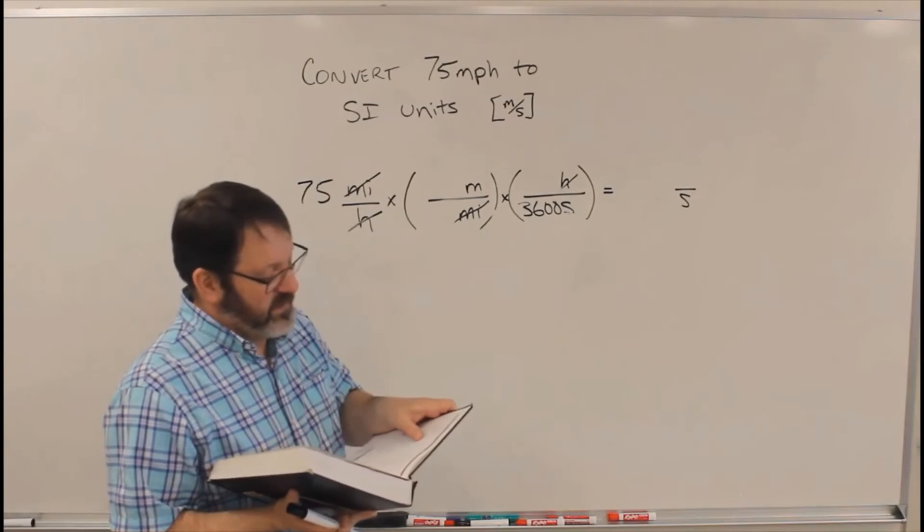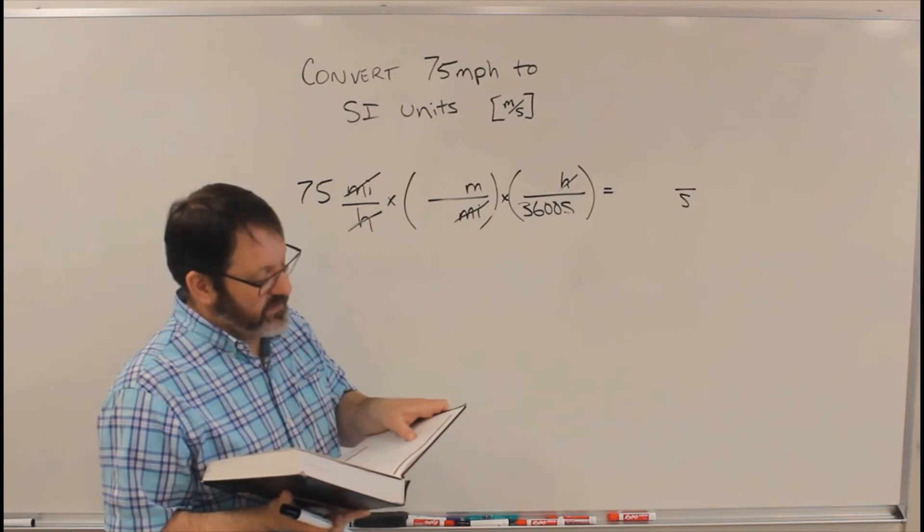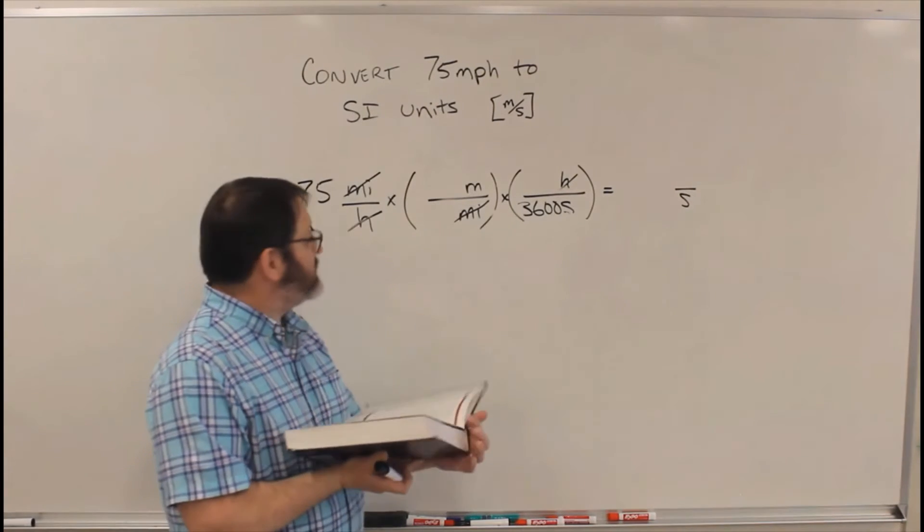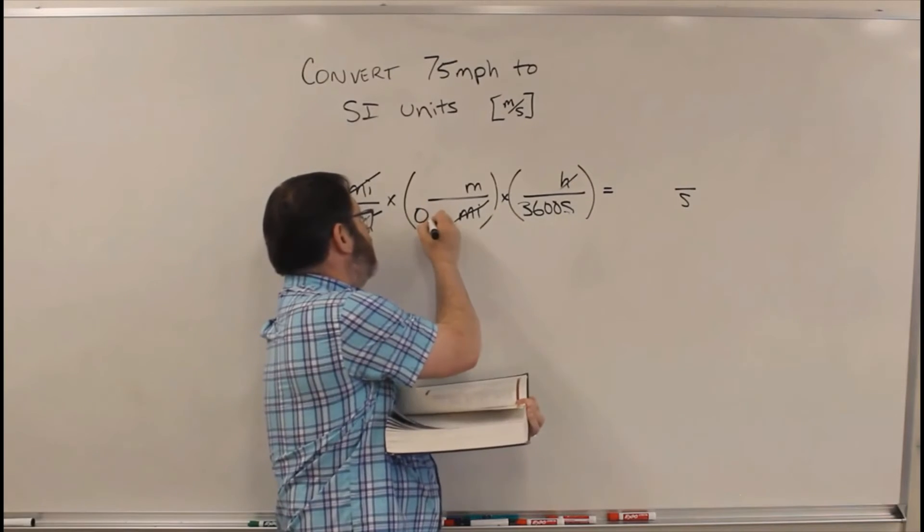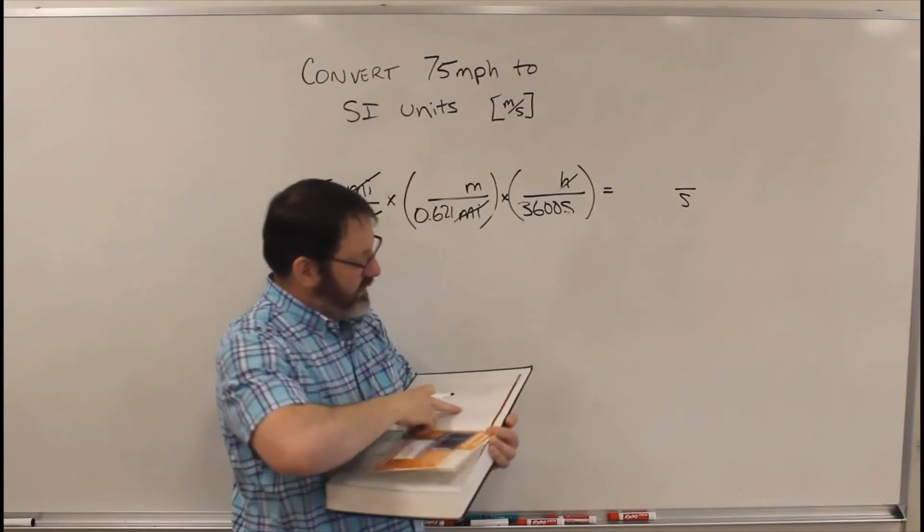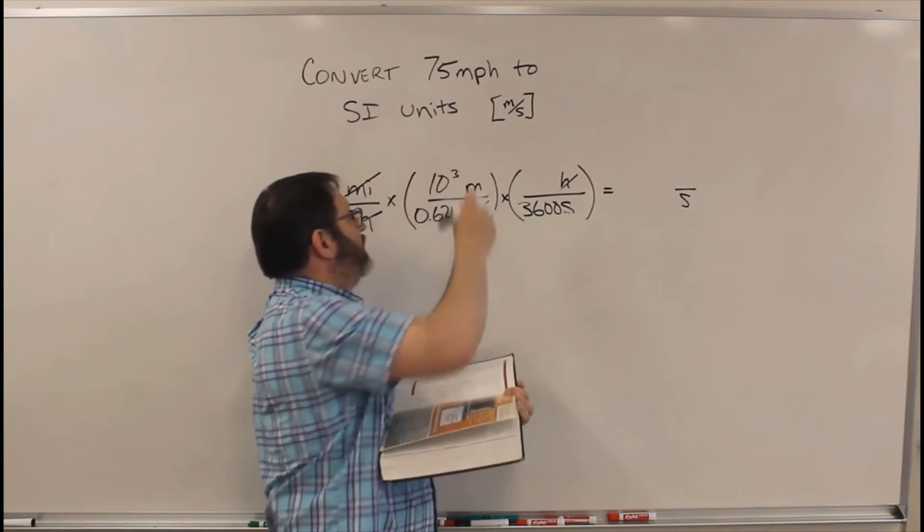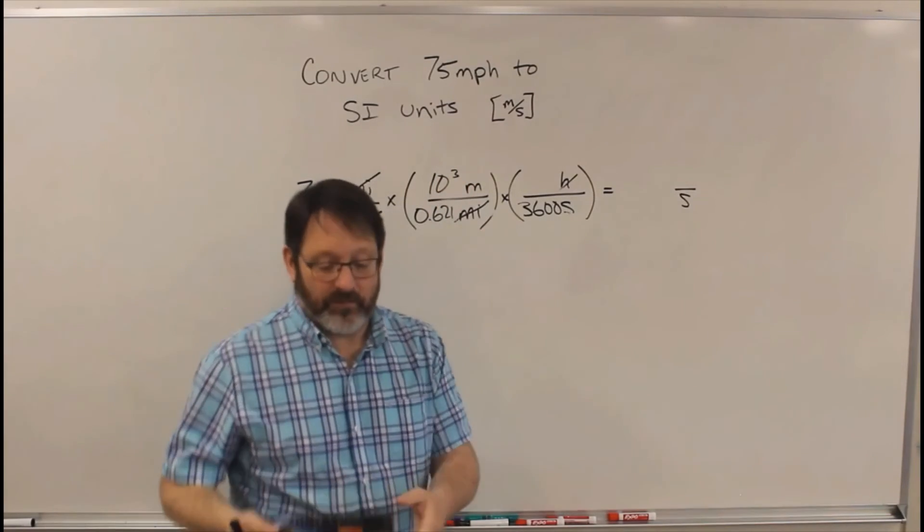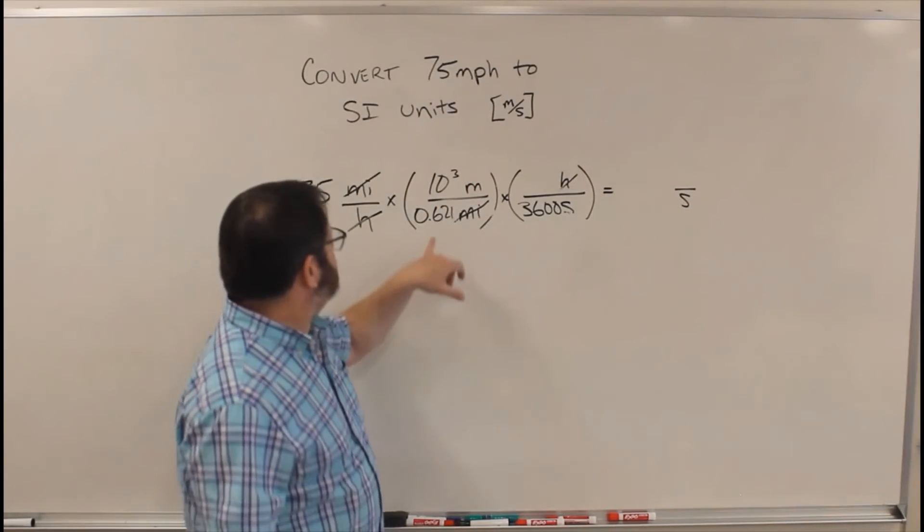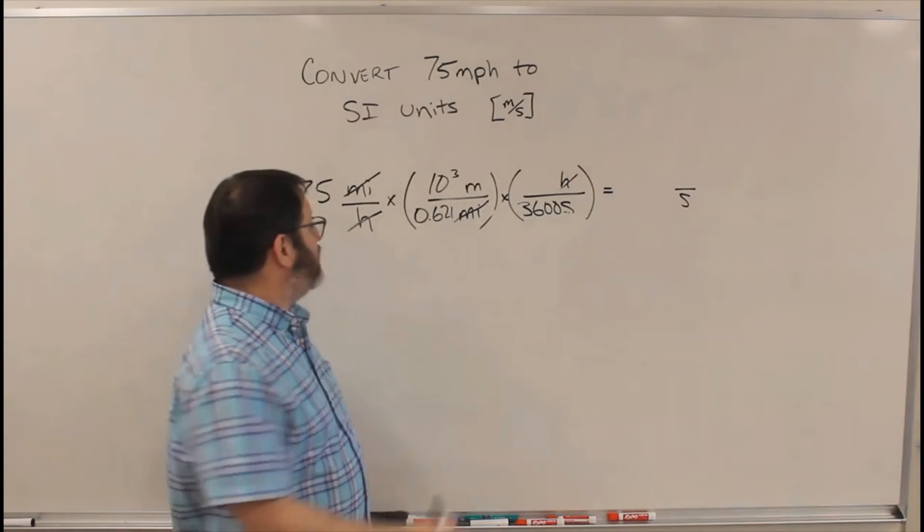Is there another way to do it with miles? There we go. I've got miles. 0.621 miles. 0.621 miles equals 10 to the third power meters. So 0.621 and 10 to the third.